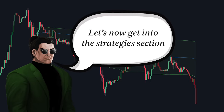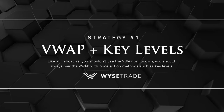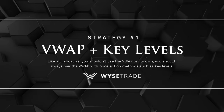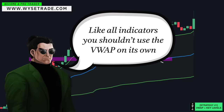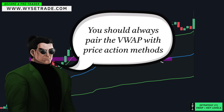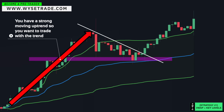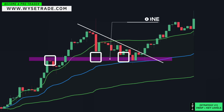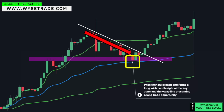Let's now get into the strategies section. Strategy number one: VWAP combined with key levels. Like all indicators, you shouldn't use the VWAP on its own — you should always pair the VWAP with price action methods. You have a strong moving uptrend, so you want to trade with the trend. These reversal points give you a key zone. Price then pulls back and forms a long wick candle right at the key zone and the VWAP line, presenting a long trade opportunity.